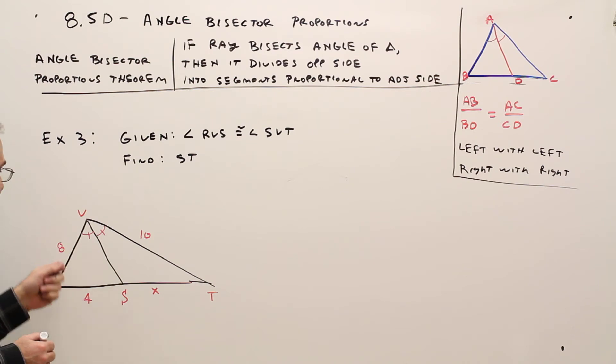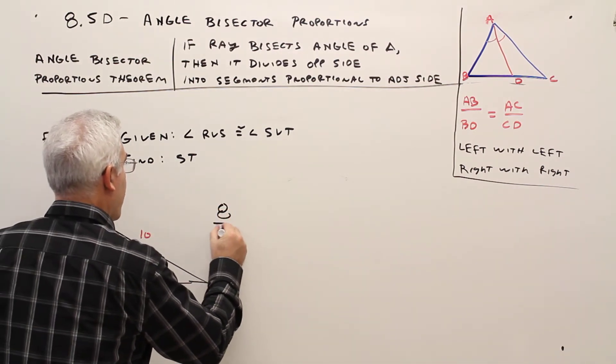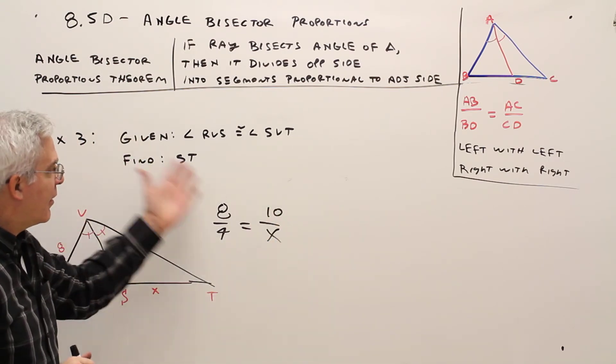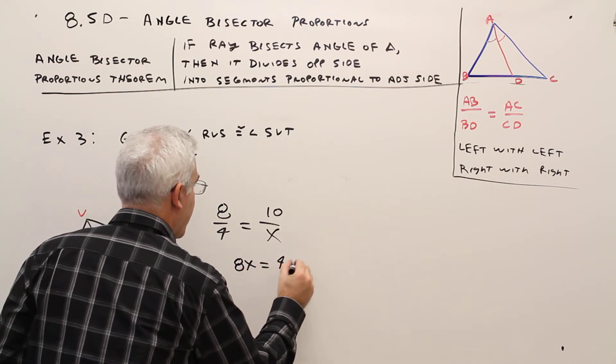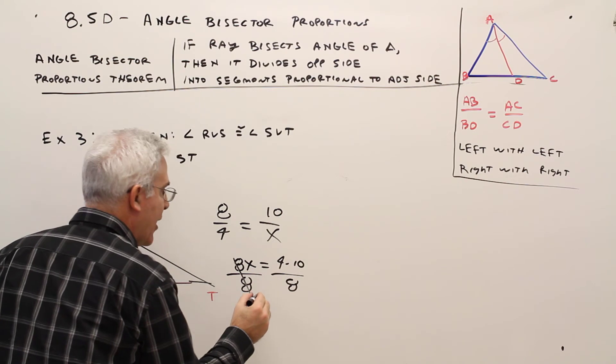So it's very simple. Left with left equals right with right. So 8 over 4 equals 10 over X. Could cross multiply. 8X equals 4 times 10. Divide by 8.